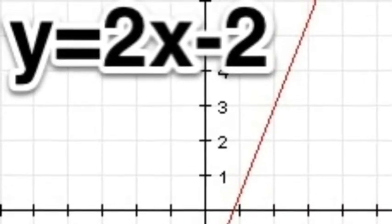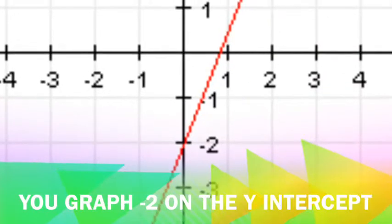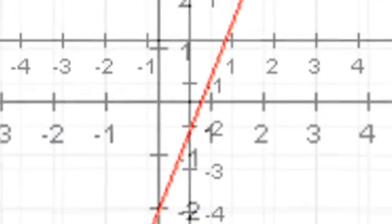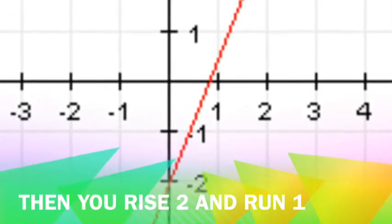For example, y equals 2x minus 2. At the y-intercept, you graph negative 2. Then you rise 2 and run 1.